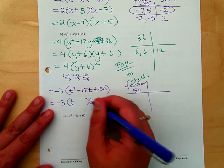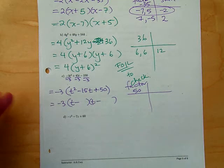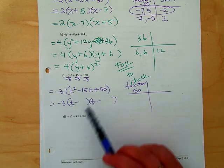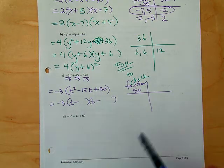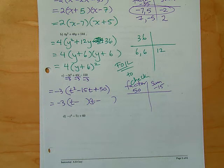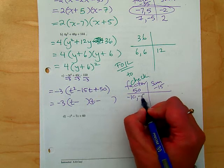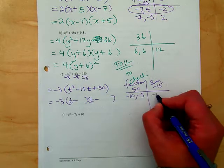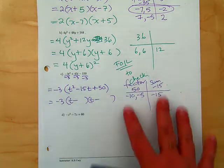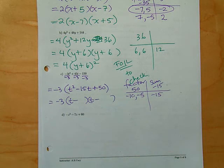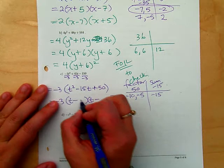We'll factor 50. Any ideas what the signs are going to be? They're going to be both negative. Why? To get the positive we have to have the same signs. We're going to look for a sum of negative 15. Any ideas about the factors? Negative 10 times negative 5 gives us 50. Sometimes you find it on the first one. Do you have to continue this table? No, this table is completely optional.